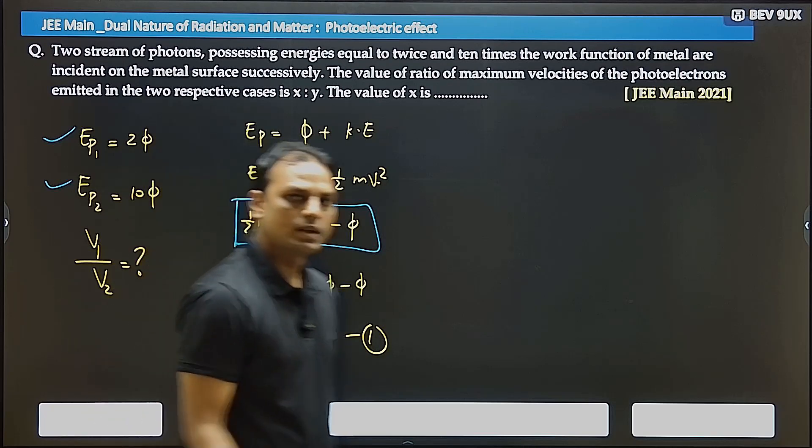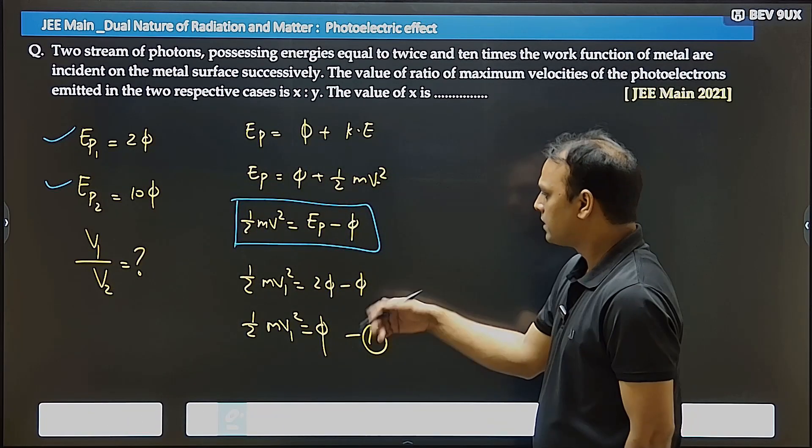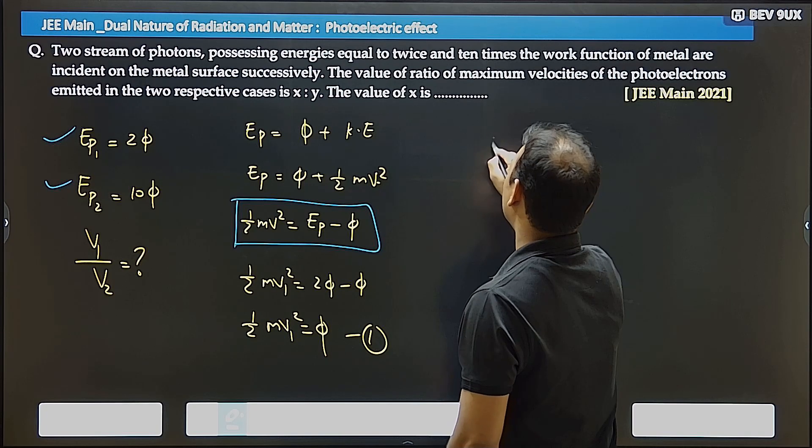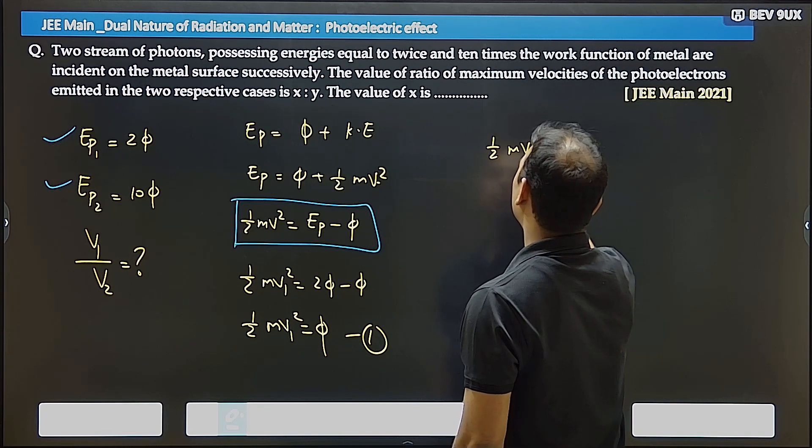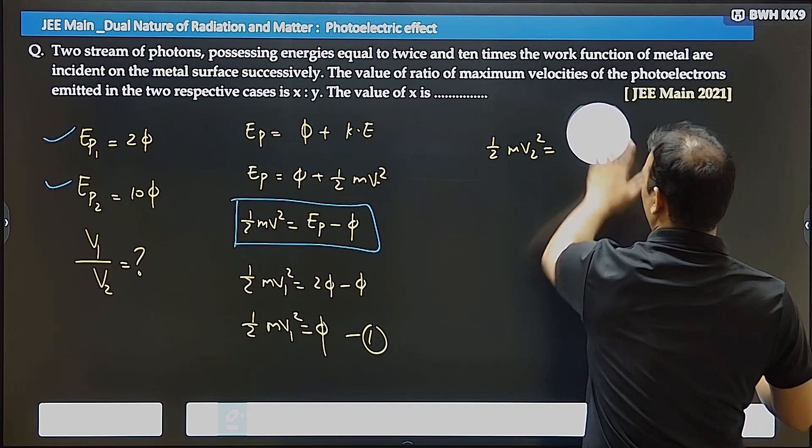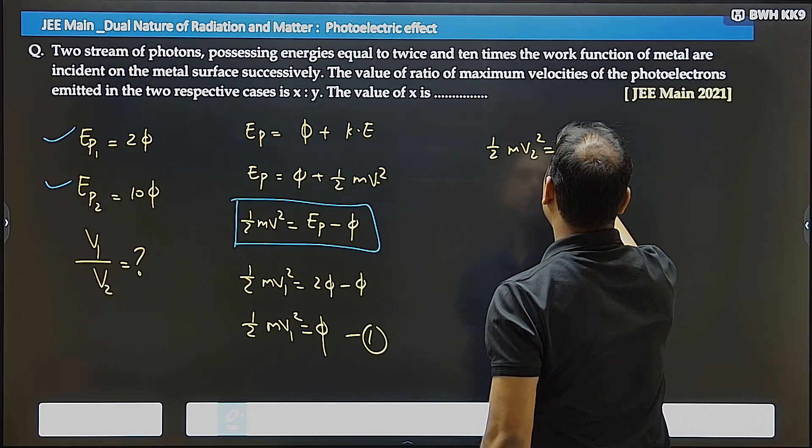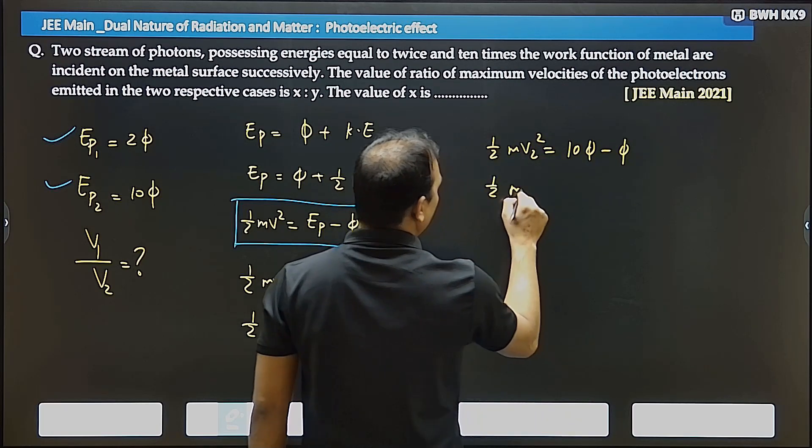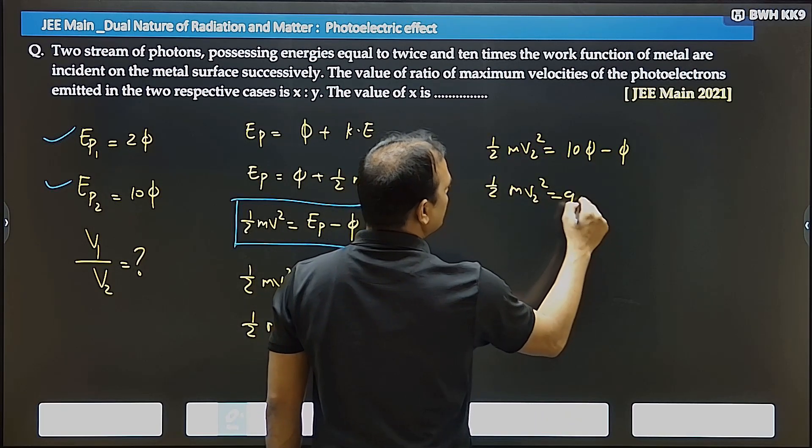Second photon has energy 10 times the work function, so you have one-half m v2 squared equals 10 times work function minus work function. That is, one-half m v2 squared equals 9 times work function. That is the second equation.